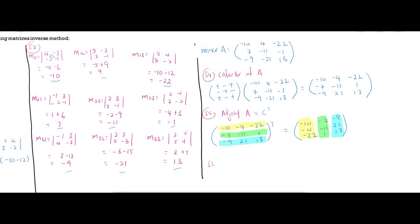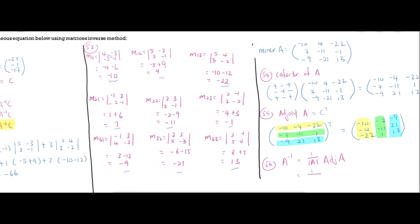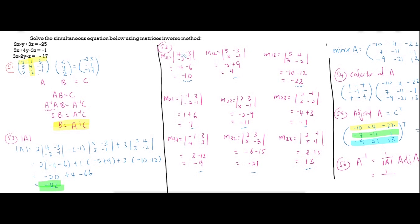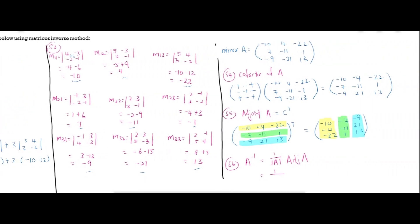Step 6: inverse A equals 1 over determinant A, multiplied by adjoint A. Therefore, it equals 1 over negative 82, multiplied by the adjoint. The adjoint matrix contains: negative 10, negative 7, negative 9; negative 4, negative 11, 21; negative 22, 1, and 13.